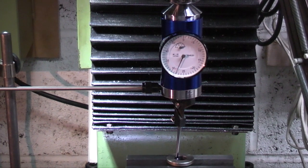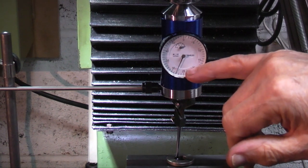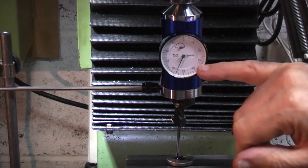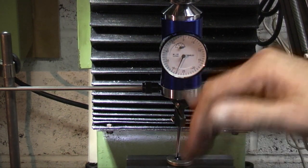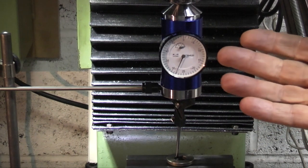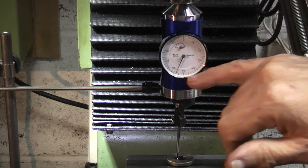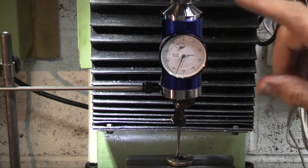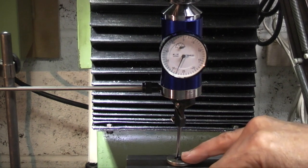Now one thing I should point out is that the reading you're getting on here is not a true reading. You're only using the indicator as an indicator. In other words, you can't say it's running out two or three thou or 0.1 of a millimetre. Because you've altered the reading on the dial indicator by extending and using the probes.